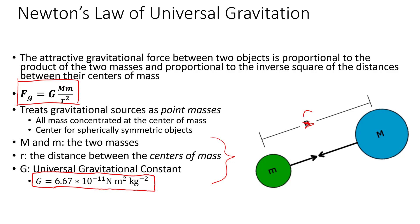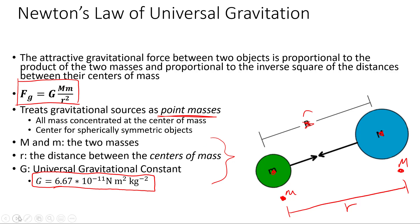One thing to note about this equation is it treats gravitational sources as point masses — we're finding the gravitational attraction between point masses a distance r apart, with masses little m and big M. There's a mathematical theorem that says if you have a spherically symmetric object, the gravitational force is going to be the same as a point mass with the same amount of mass all concentrated at the center. So when using this equation, r is the distance between the centers of the objects — the centers of mass. Treat spherically symmetric objects like point masses with all the mass at the center, and we get an accurate value for the gravitational force.